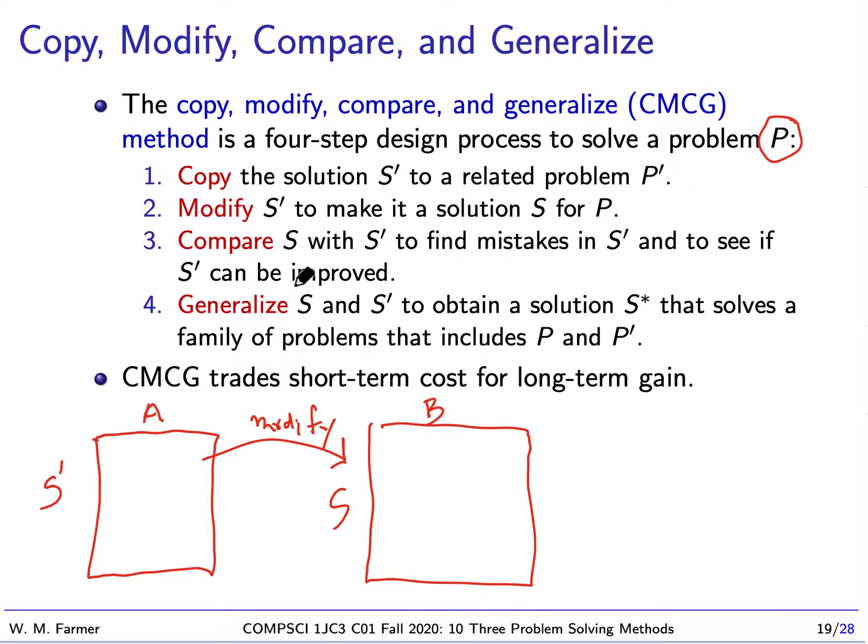But now there's something else we can do, which is we're going to compare S prime and S. So I've taken A, I've copied it, I turned it into a letter for company B. And while I'm copying it, I could have noticed there were some things in A that were mistakes or there are some things that could have been done a little better and I go and fix those. So there could be some things in here that I fix. So I compare these two. In a sense, I'm using the situation with company B to go back to company A's letter and see how I could have improved that.